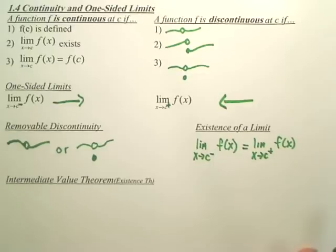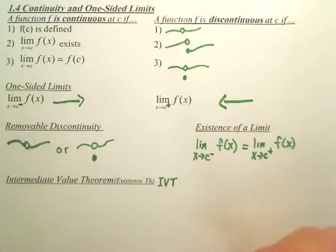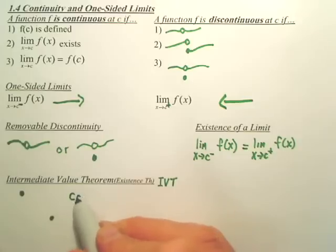And lastly, the intermediate value theorem, IVT. It's an existence theorem. It's basically saying, if I have a point here, if I have a point here and a point here, and I'm making a continuous line.